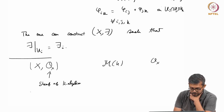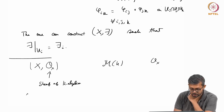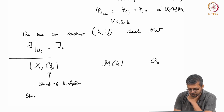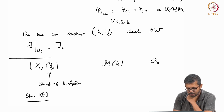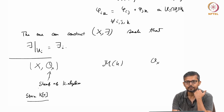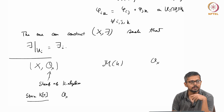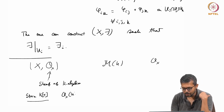For example, take X to be an affine variety. Take S to be some K[X], a maximal ideal of some finitely generated K-algebra. Then you define OX, the structure sheaf - the regular functions on X. So OX(U) is the regular functions on U.